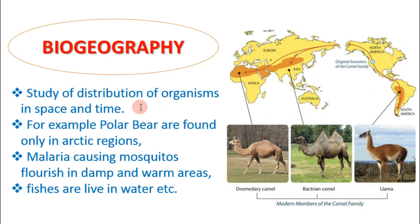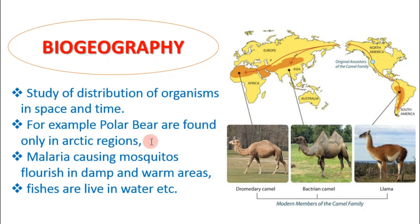Biogeography is the distribution of organisms in space and time — the distribution of organisms around the world. For example, the polar bear is distributed in the Arctic region. It cannot be found in other places like Pakistan, because the Arctic is its specific region of distribution.